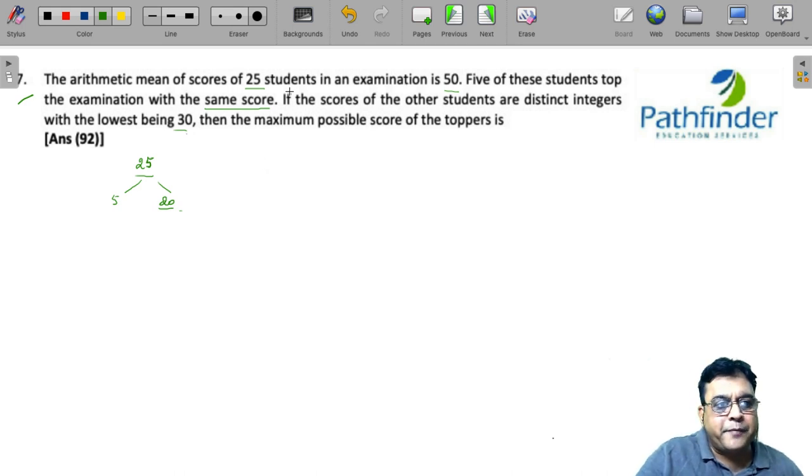The arithmetic mean of the scores is 50, so 50 is the arithmetic mean of all the students. Now what about the scores of other students? They are distinct integers.